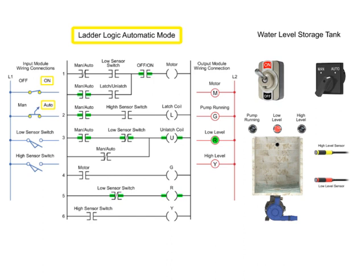As the water level rises, the low sensor switch turns on, the red indicator lamp turns off, indicating the level is no longer low, and the internal bit is unlatched.